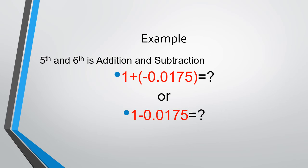Finally, the fifth and sixth steps in this example are addition and subtraction. In this case, you got 1 plus minus 0.0175, or you can say 1 minus 0.0175. Both are equivalent.